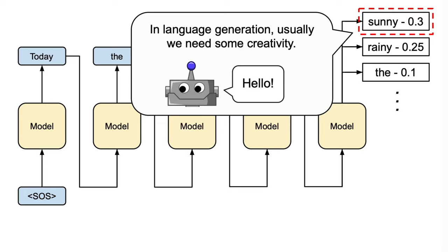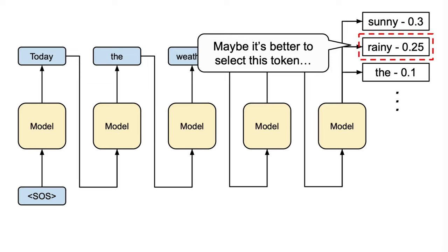By incorporating randomness through techniques like temperature, top-k, and top-p sampling, we introduce an element of variability that goes beyond rigid deterministic choices.